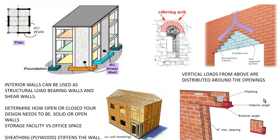In order to support the opening, we use lintels. It's called a lintel, but it can be made of many different things — you could use a concrete bond beam, which is grouted solid. In this case, it's showing double back-to-back steel angles, and they bear on the wall here six to eight inches so that there's something it's sitting on. Interior walls can also be used as structural load-bearing walls and shear walls.